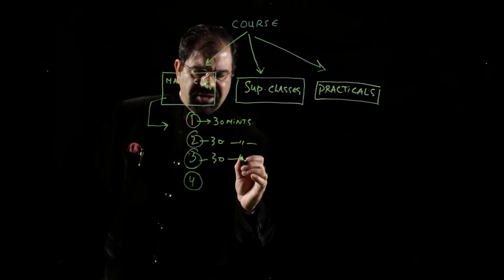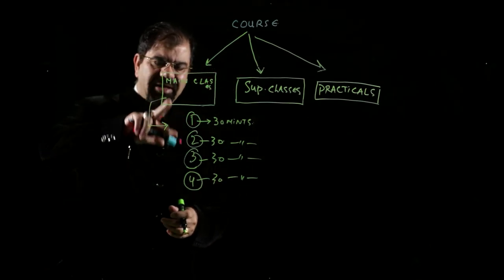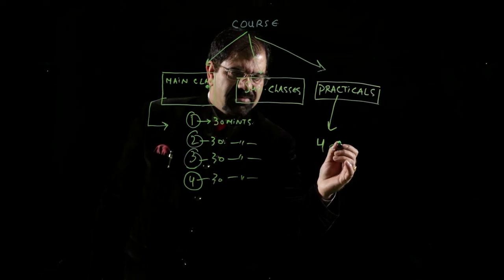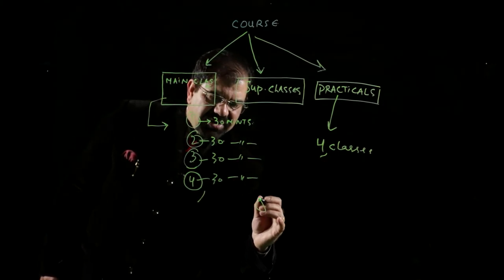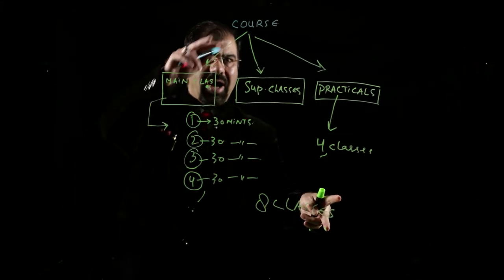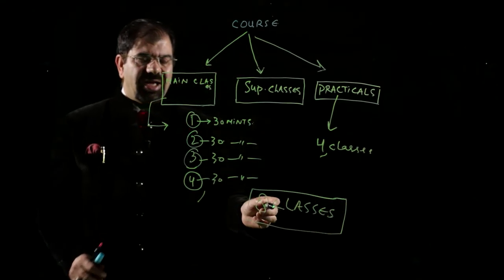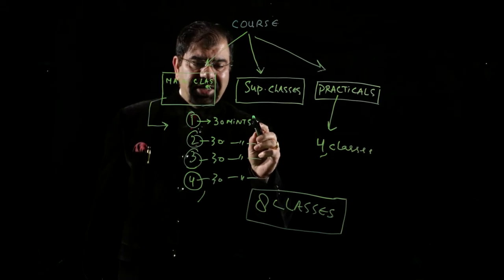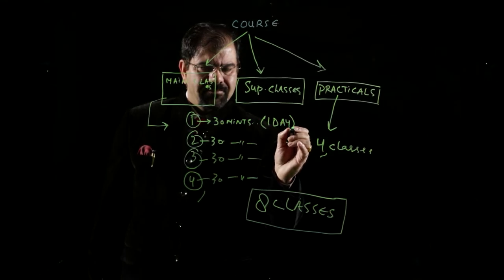Now, how much time will we give you? In the main class, we are having four classes, and in the practicals, we will be having four classes. That means eight classes in total. When we are having eight classes in one course, and each class is 30 minutes, we will give you complete 24 hours — that is one day — for one class.